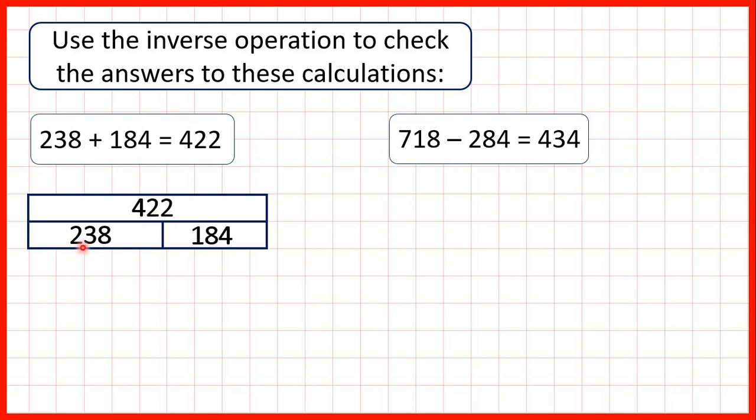So here notice I've drawn a slightly larger bar for 238 than I have for 184 because 238 is larger. Also notice the bar on top is the same size as the two bars below put together because if this calculation is correct then adding these two numbers should give us the total that we have on top.